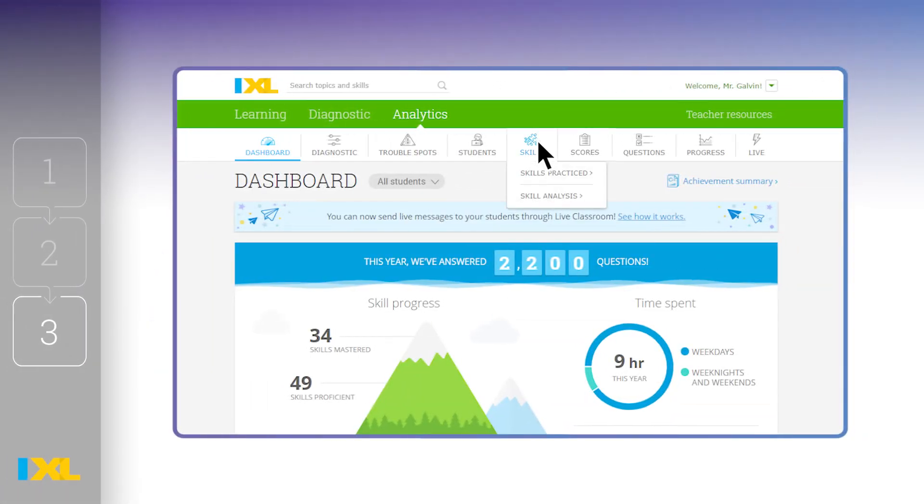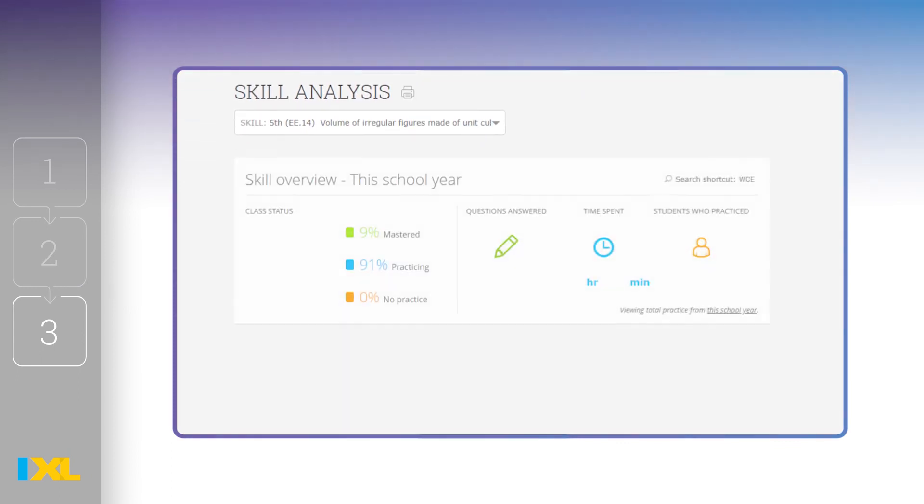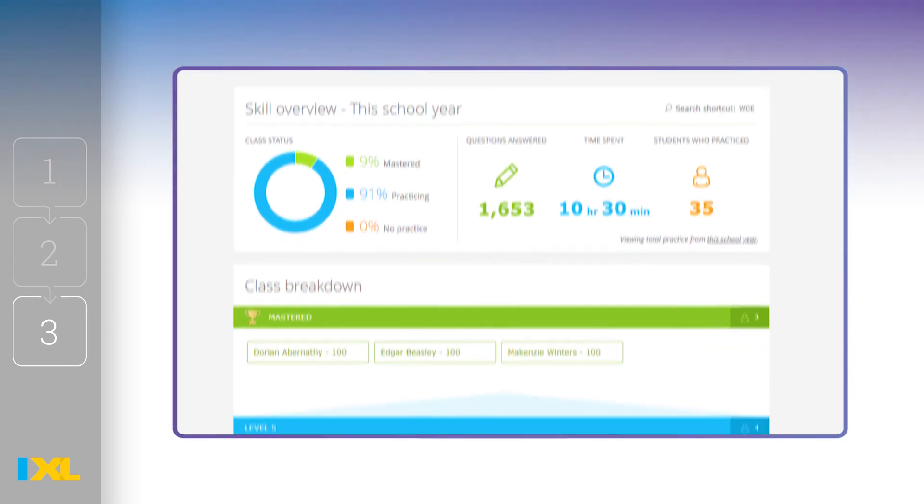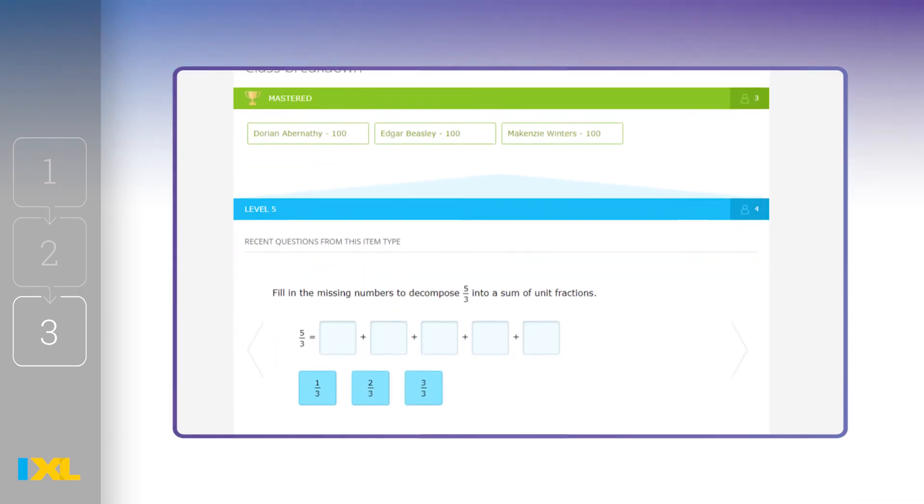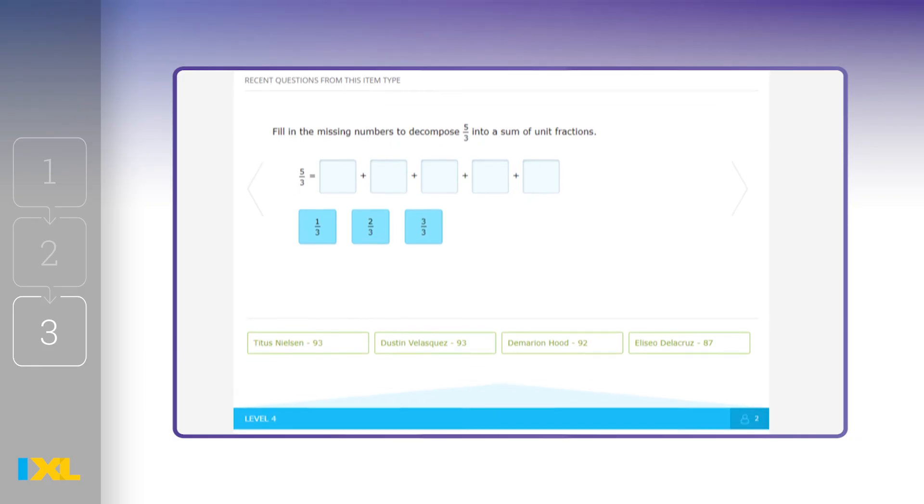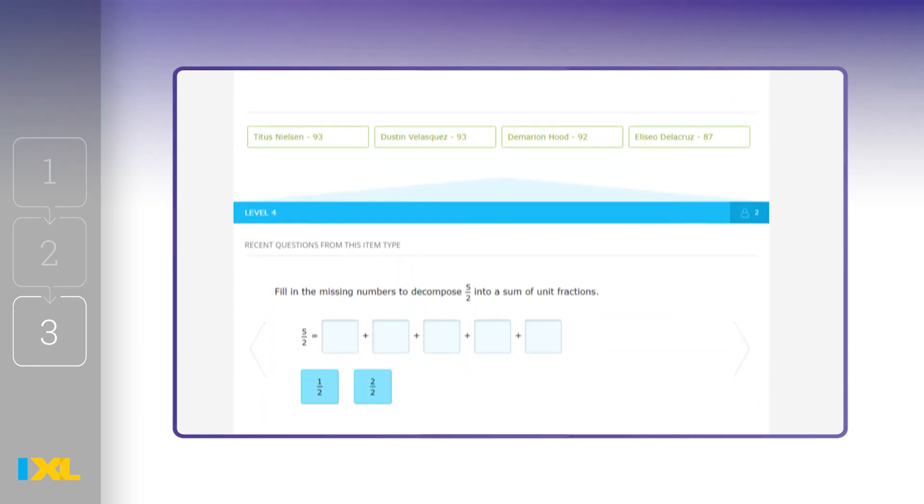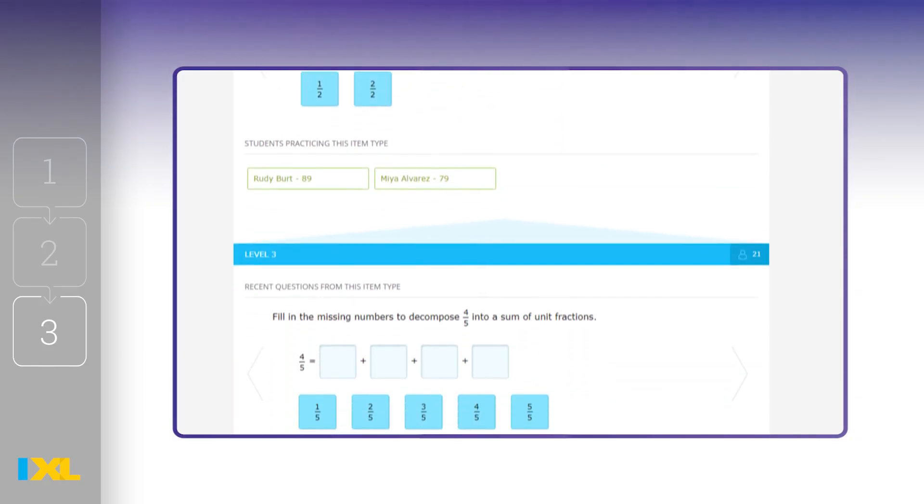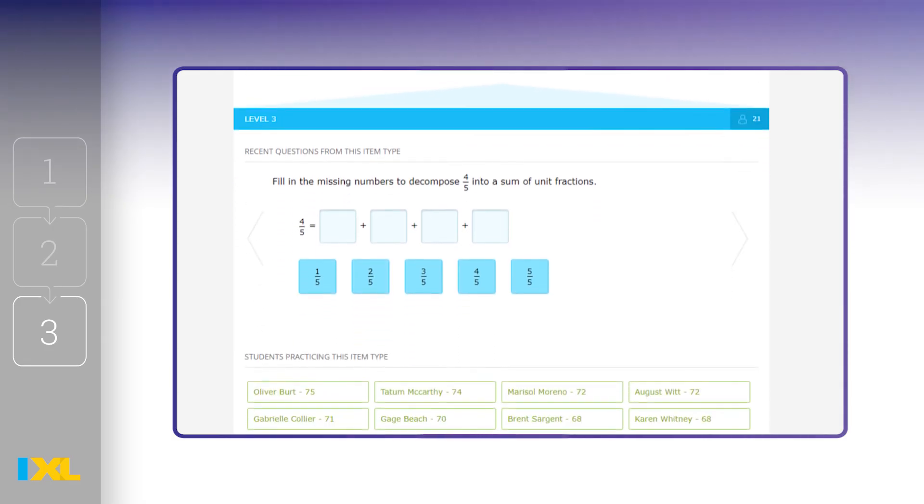I would suggest the skill analysis report, which shows you where every student is at on the skill you assigned. You'll see which students hit their SMART score goal, and which went above and beyond. And then, you can see which students are still working and may need some additional assistance or reteaching.